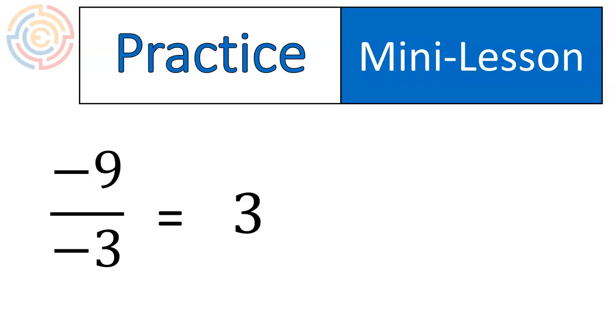Negative divided by negative gives us a positive. And 9 divided by 3 is 3. How about negative 30 divided by positive 10? Did you get negative 3? If so, you're correct.